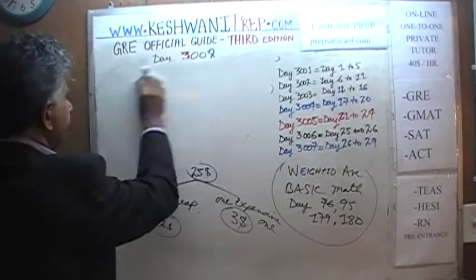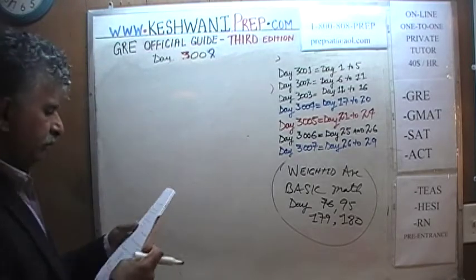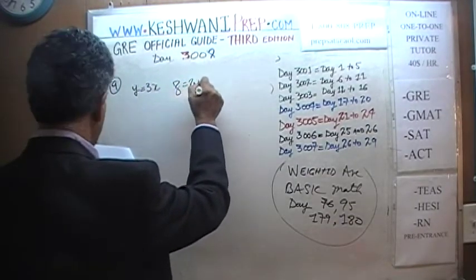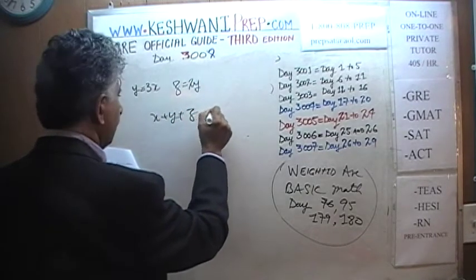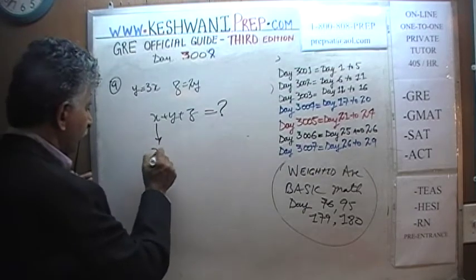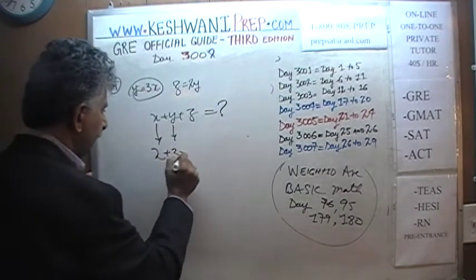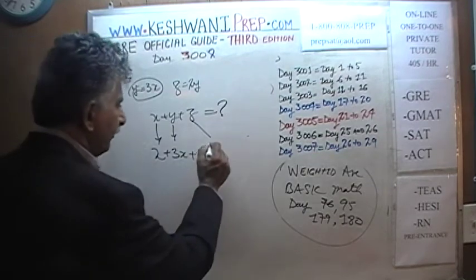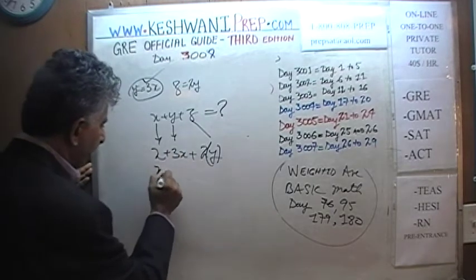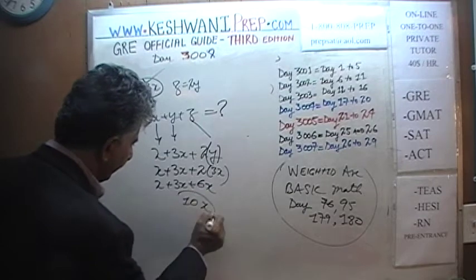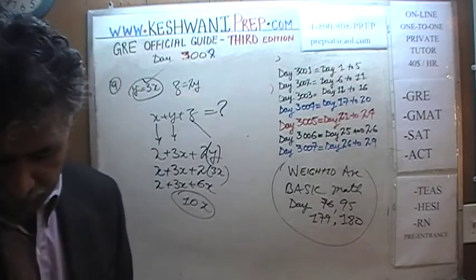Problem number 9: we are told that Y equals 3X and Z equals 2Y. The question is what is the value of X plus Y plus Z in terms of X. X is just X; Y is 3X; Z is 2Y, but substituting, Z equals 2 times 3X which is 6X. So X plus 3X plus 6X gives a grand total of 10X.